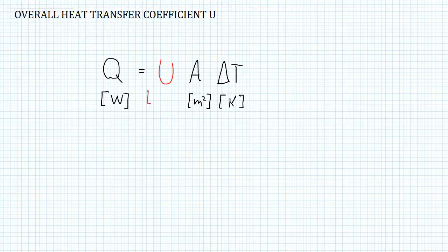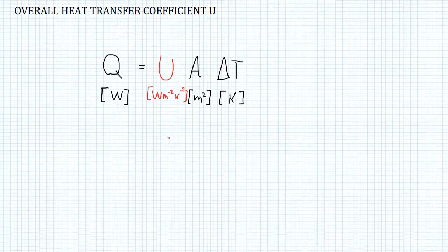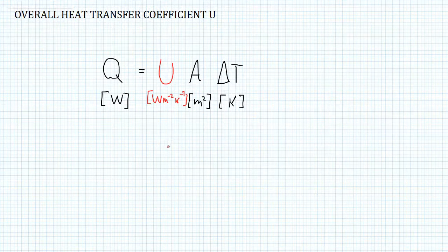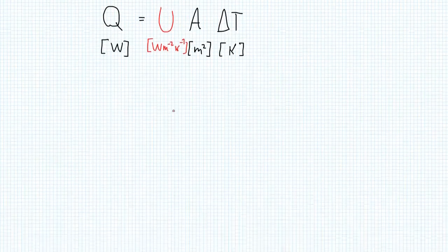And the units of U, the overall heat transfer coefficient, will be watts per meter squared per Kelvin. This term U is really what's summarizing all the factors mentioned earlier, all the resistance to heat transfer. So it's very important to understand it and be able to calculate it properly.